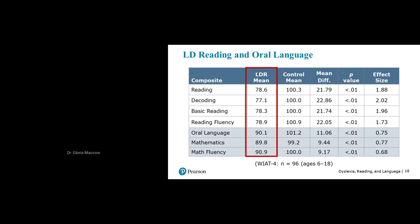What if a student is classified with a learning disability in reading — how is that child likely to perform on oral language? We looked at data from a special group study using the Wechsler Individual Achievement Test, Fourth Edition. For the LD reading group, the reading composites — decoding, basic reading, and reading fluency — show standard scores in the 70s. But notice oral language scored 90, mathematics 89.8, and math fluency 90.9. If a child is diagnosed with a learning disability in reading, oral language may be preserved, whereas a weakness in spoken language tends to transfer across curriculum areas.